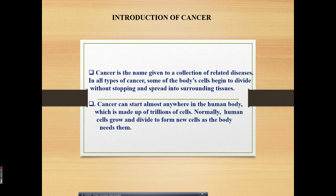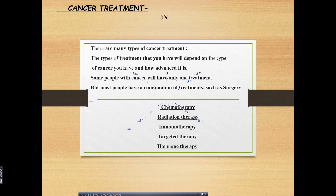You also have to cover cancer treatment — how will you treat cancer. Some surgeries are available, some chemotherapies are available, radiation therapies, immunotherapies, targeted therapies, and hormone therapy. These are the various treatments that we are currently using in cancer treatment.